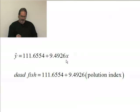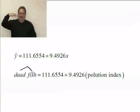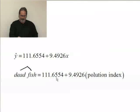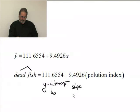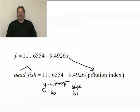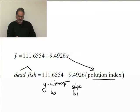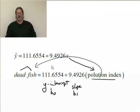In terms of our actual problem, what we're predicting is dead fish. So I should really say dead fish hat. Remember that hat says it's the predicted value. Equals 111.6554, this is what we're thinking of as the y-intercept, that's b0, plus 9.4926, that's the slope which we're thinking of as b1, times X. X in this case is actually the value in the pollution index. So the way I would use this is if I put in a value for the pollution index into here, then that would simply do the arithmetic and give me my estimated value for the dead fish.